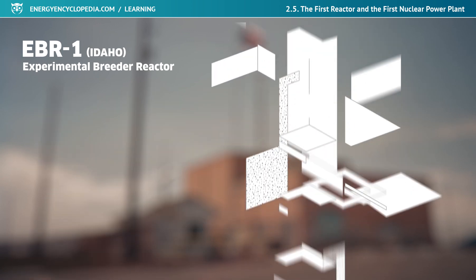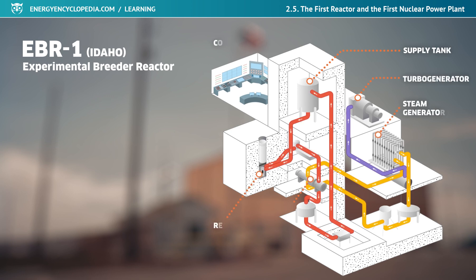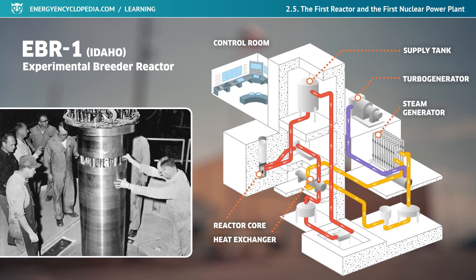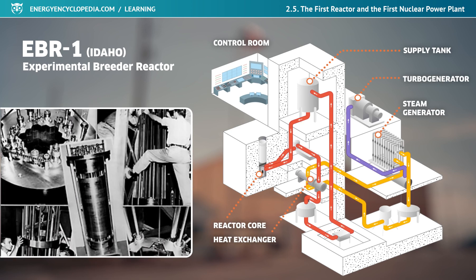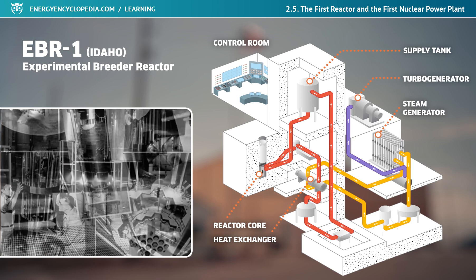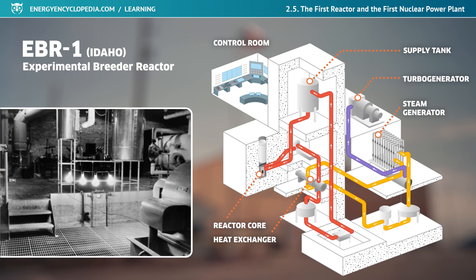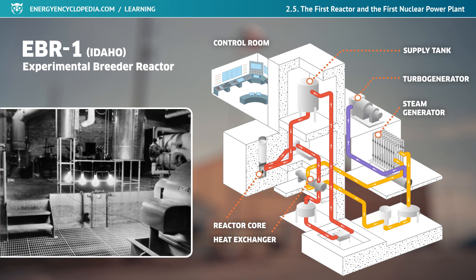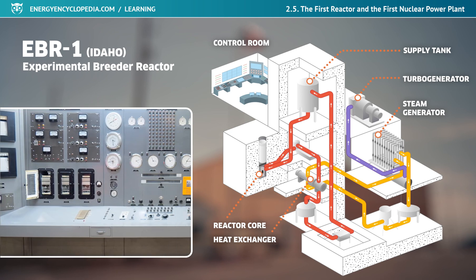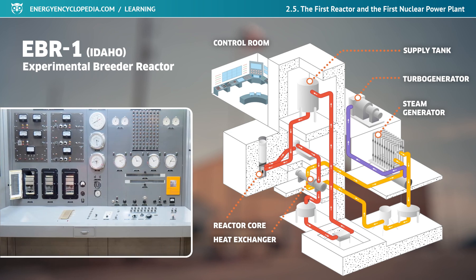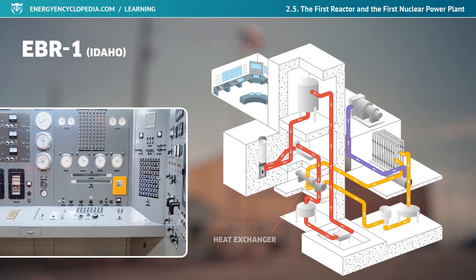The maximum power output of the power plant's turbo generator was only 200 kilowatts, but it was this turbo generator that produced electricity for the four famous light bulbs, first lit on the 20th of December, 1951. The very next day, the first nuclear power plant was able to supply electricity to the entire building.